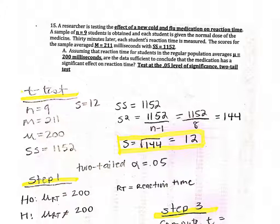The sample's average for reaction time is equal to 211 milliseconds, with the sum of the square deviations being 1,152 milliseconds. Now assuming that reaction time for students in the regular population averaged 200 milliseconds, we want to know if the data is sufficient to conclude that the medication had a significant effect on reaction time. This will be tested at the 0.05 level, and since the question asks whether it has a significant effect, it's going to be a two-tailed test.